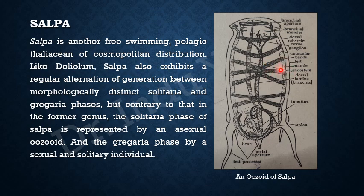This is the test, the outer covering of the animal. Inside the test is the mantle. On the posterior side — this is the pharyngeal region — and on the posterior side you can see the heart and the intestine.